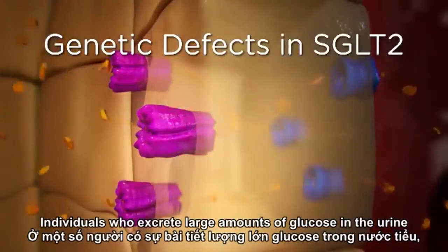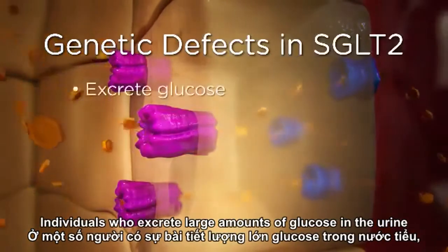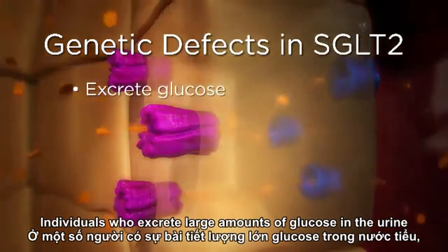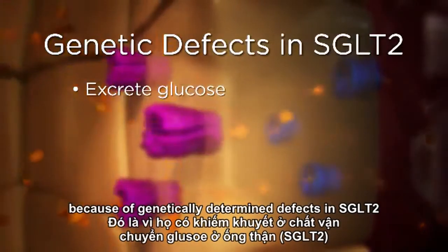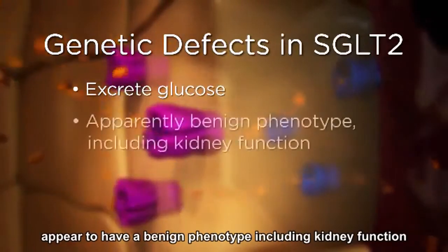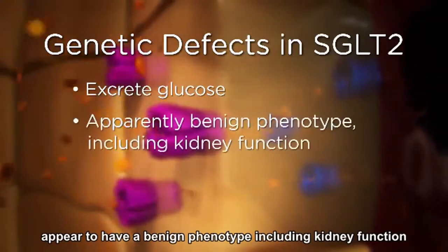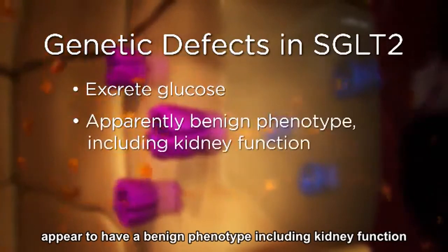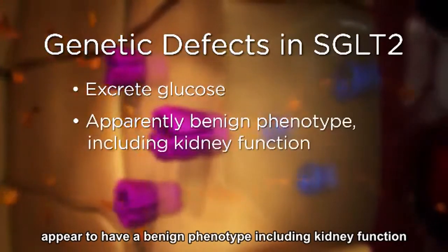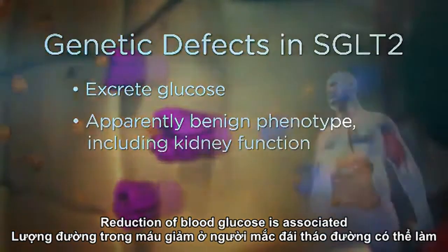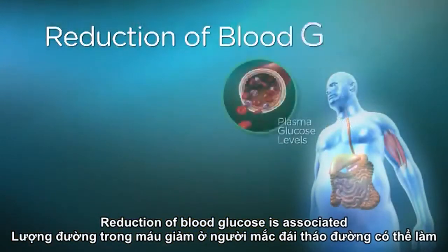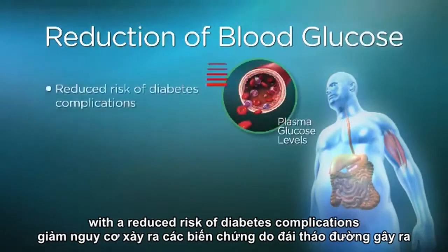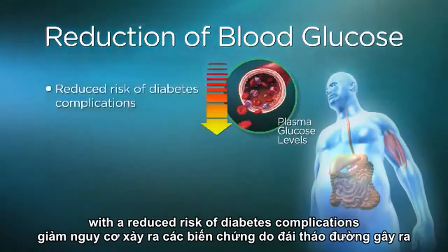Individuals who excrete large amounts of glucose in the urine because of genetically determined defects in SGLT2 appear to have a benign phenotype, including kidney function. Reduction of blood glucose is associated with a reduced risk of diabetes complications.